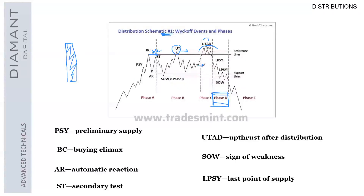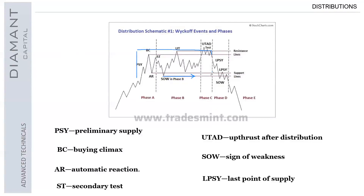We get a reaction from the top, it takes that liquidity, goes down, breaks some internal structure. The main point we want to see is a break of the sign of weakness (SOW) within phase B — the lowest point seen throughout this consolidation. That's the break we want to see, and that's exactly what we get in the sign of weakness right there. Once we get the sign of weakness it has to be a clean break — it can't be a wick, it has to be an actual breakthrough.